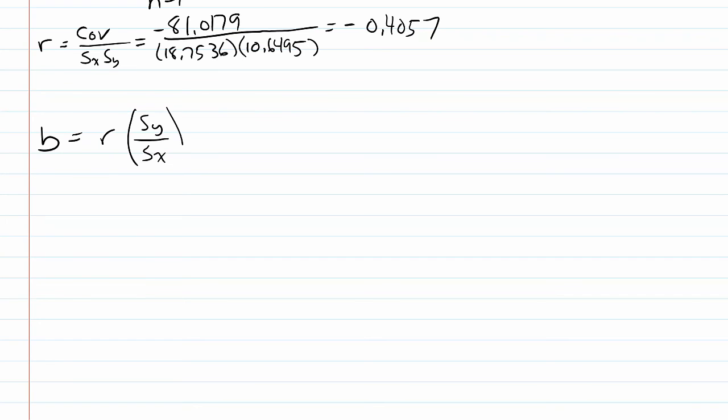The equation for the slope is going to be the correlation times the standard deviation of y divided by the standard deviation of x. That's going to be negative 0.4057 times 10.6495 divided by 18.7536. That's going to equal negative 0.4057 times 0.5679, which equals negative 0.2304.